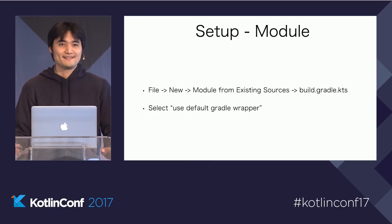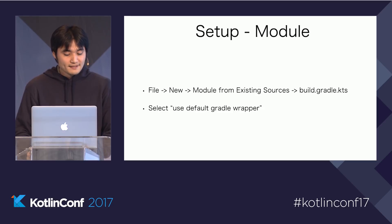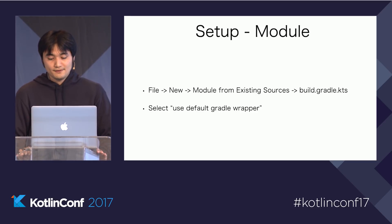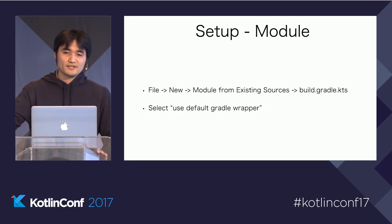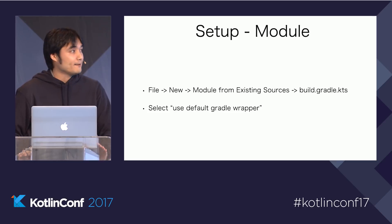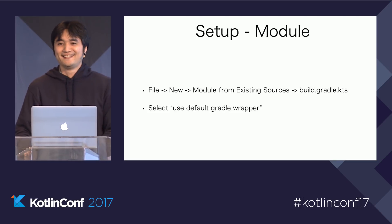The last setup step is the module. After installing the up-to-date Kotlin plugin version, you are able to open the Kotlin project. However, the first time you open it, there is no module and no source code. To fix this, go to File > New > Module from Existing Sources, and select Build.gradle.kts. After that, a Gradle import dialog pops up — select 'Use Default Gradle Wrapper'.